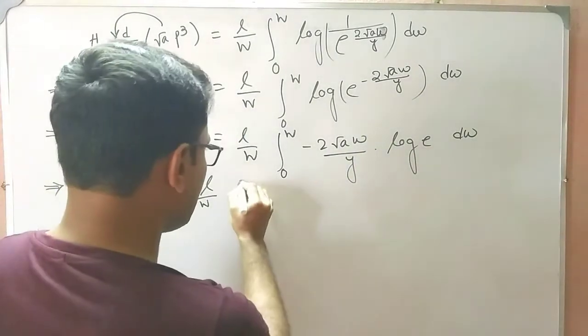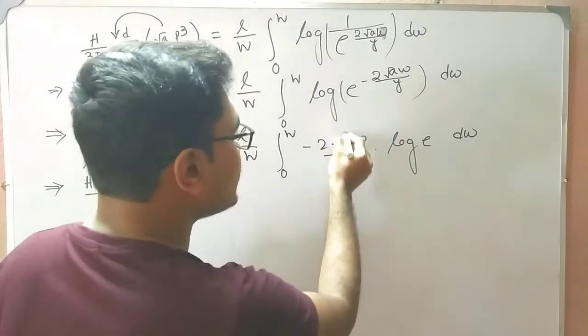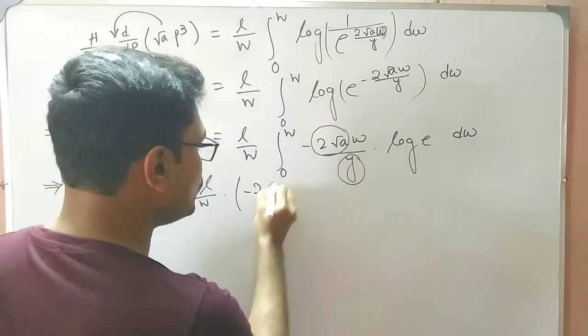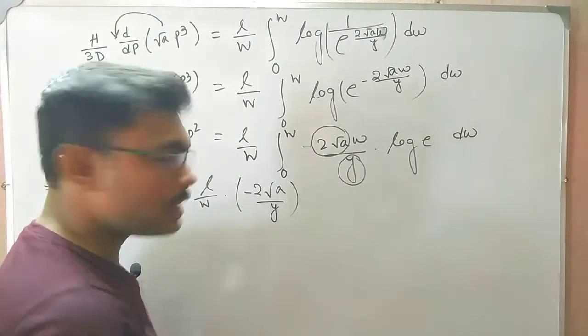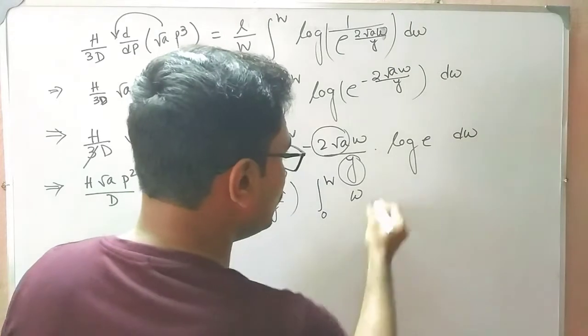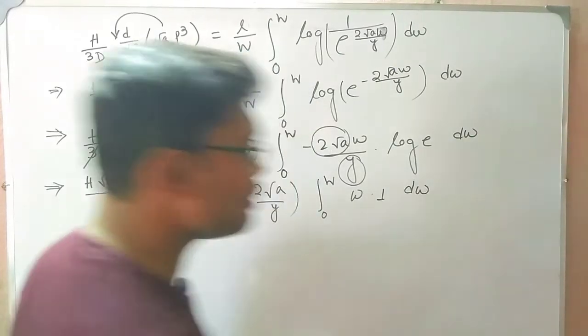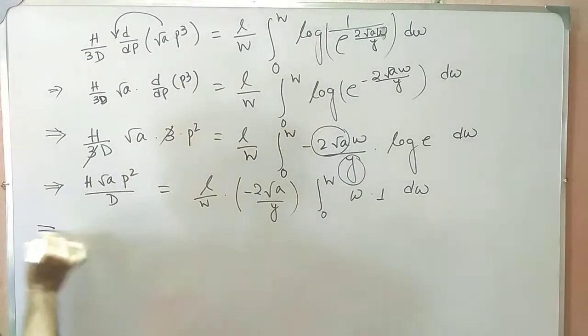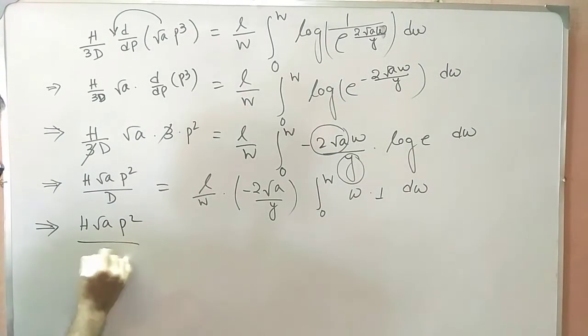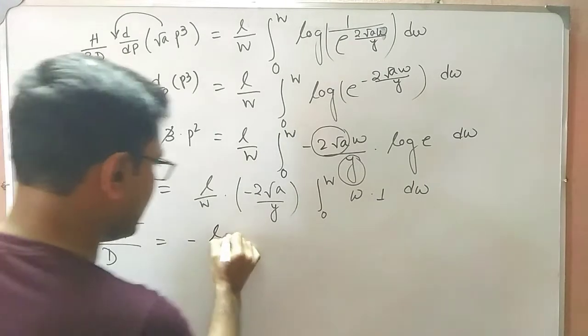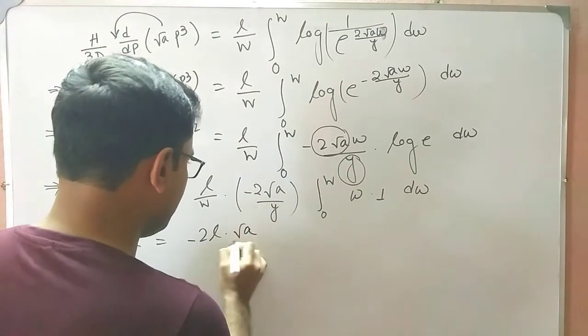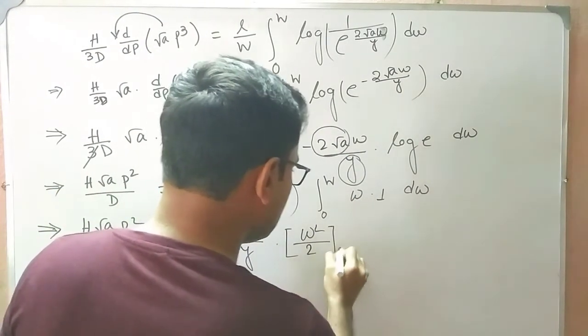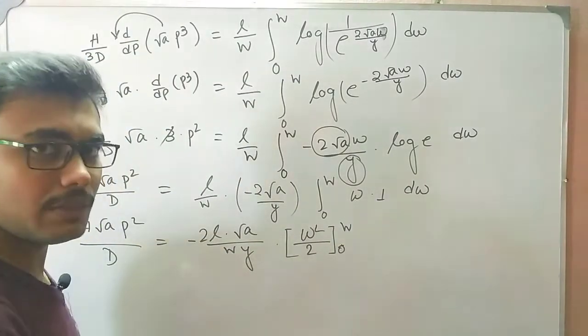And you are having from here 3 and 3 getting cancelled out. H√a*p²/D = L/W integral. Since I told you that √a and y are constant, so it is coming in front of the integral. That means 2√a/y is coming in front of the integral, and under the integration you will have w * 1 * dw, because you know the value of log(e) is 1 because the standard base here is e. And p²/D = L√a/(W*y), and if you derive this it would be w²/2 under the limit 0 to capital W.